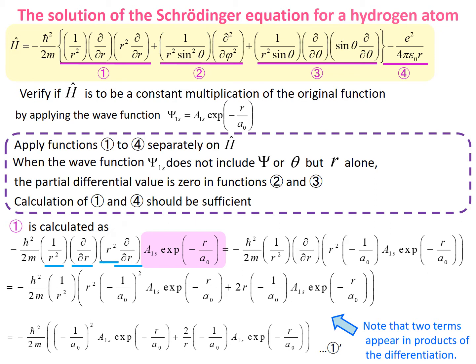Now, let us differentiate the 1s function with r. a1s is the constant that appears in the normalization, which does not change when differentiated. When we differentiate the exponential member, there goes negative 1 upon a0, and when we multiply it with r squared, it should be like this.